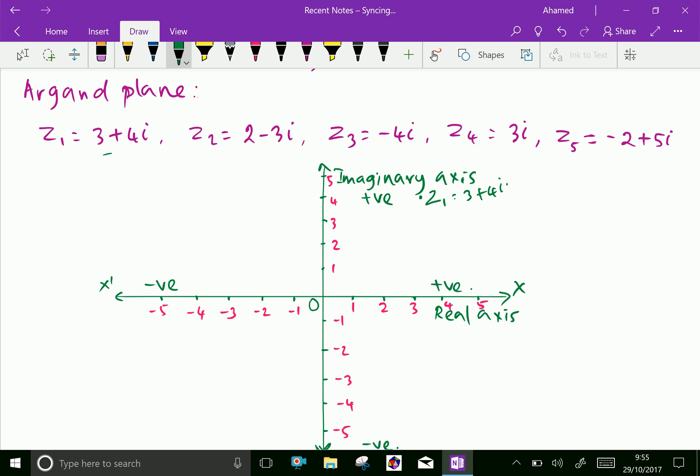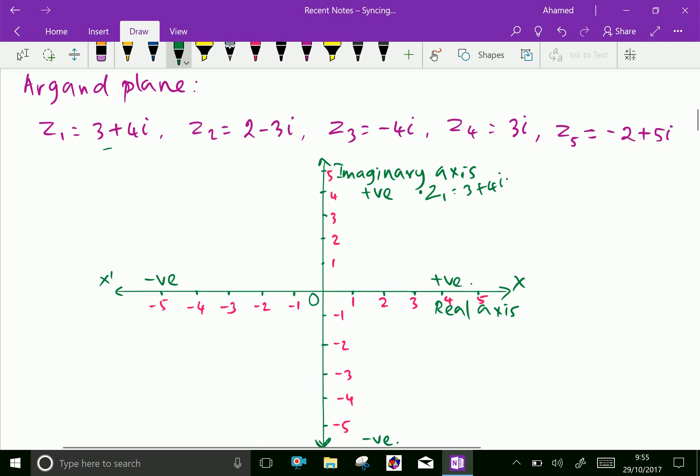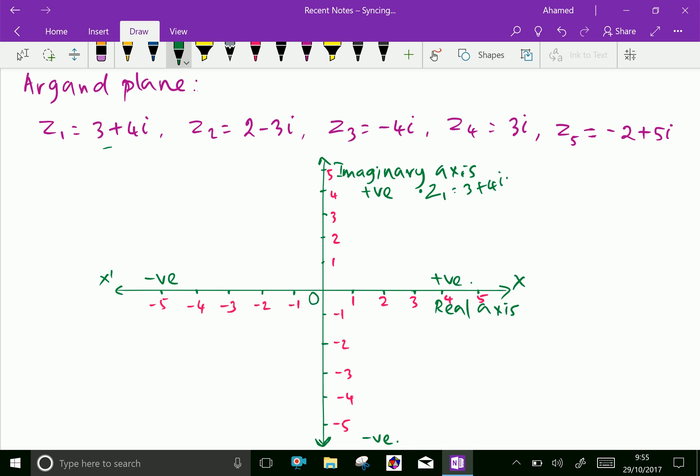Next one, z2 equals 2 minus 3i. 2 minus 3i here.